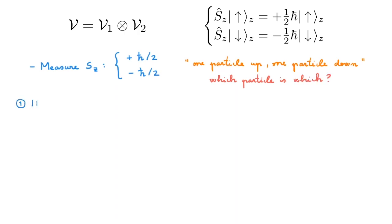A first option is this state here. It corresponds to measuring particle 1 being up and particle 2 being down, which is consistent with the outcome of the measurement up here.